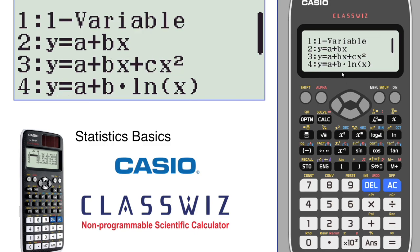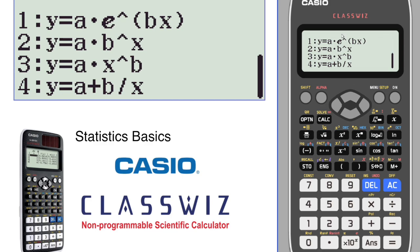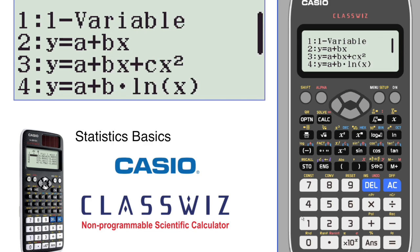We're going to start with one variable. You've got lots of different choices: linear regression, quadratic, natural log, exponential, base b exponential, power regression, and inverse. So we're just going to go ahead and choose one.